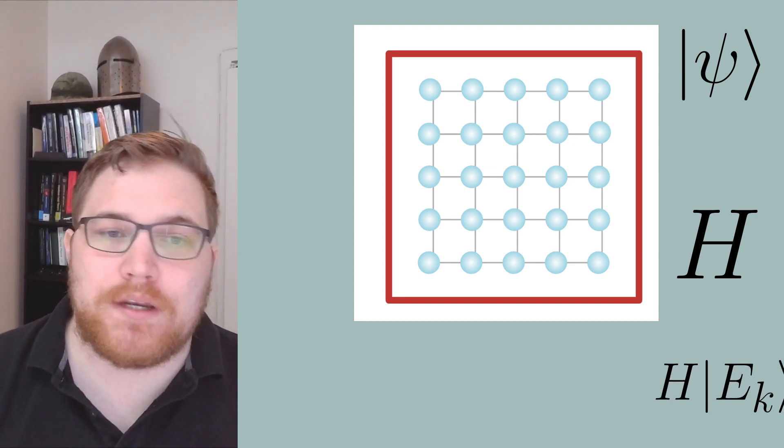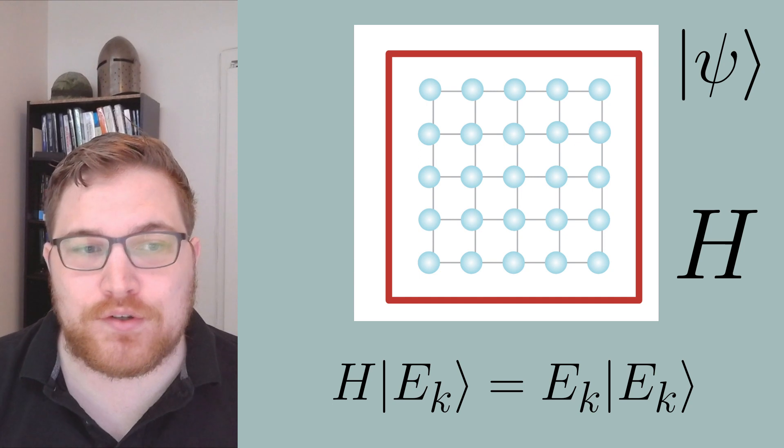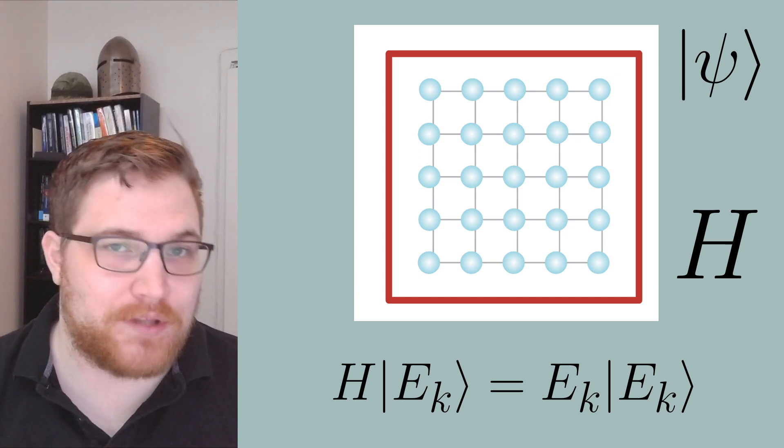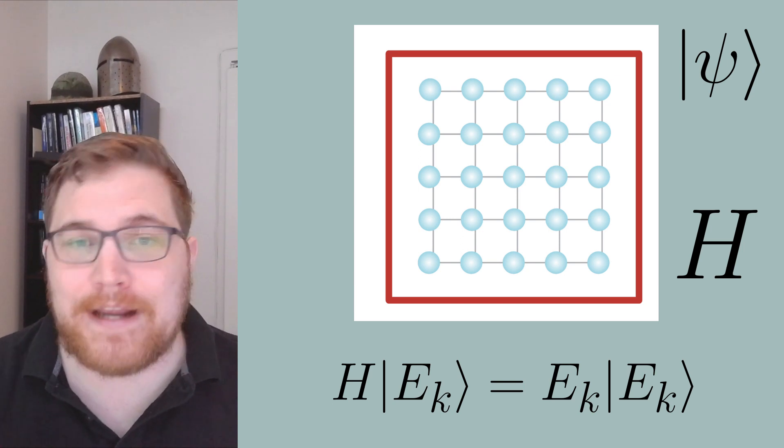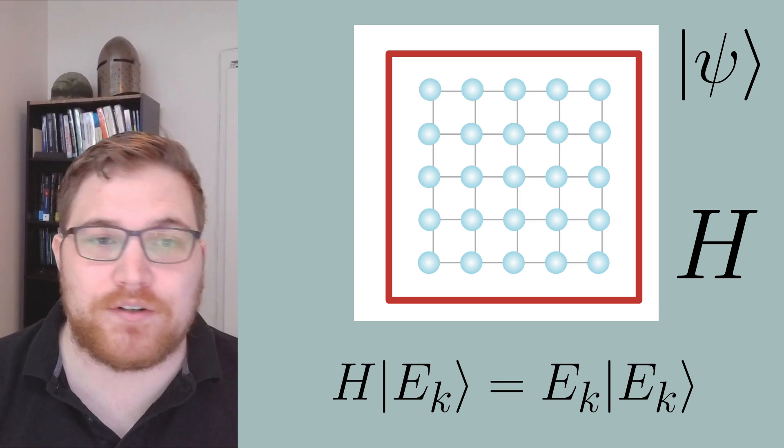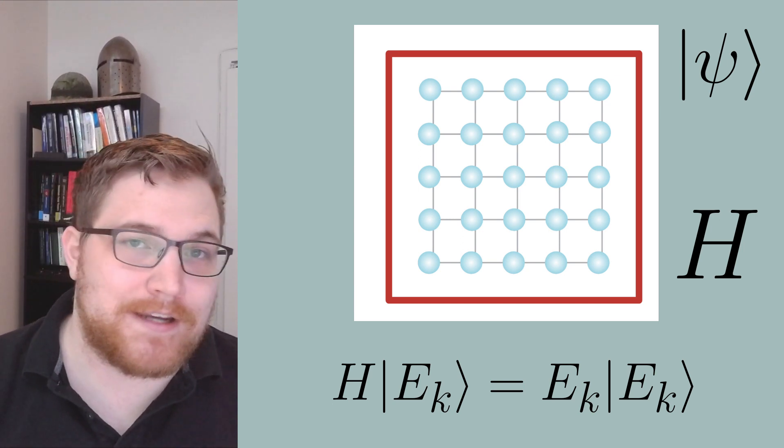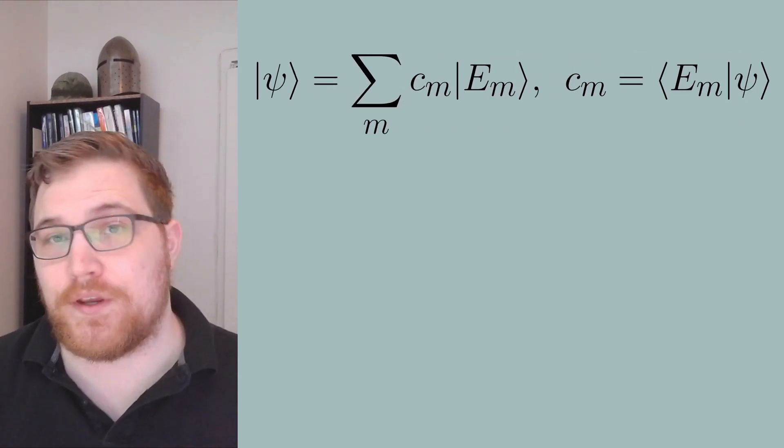If we solve the Hamiltonian and find the energy eigenvectors, we can label the eigenvectors like we usually do. Under our assumption, there is a finite number of energy eigenvectors, as long as we have a finite dimensional lattice. We can break up our pure state psi, which is our initial condition, in terms of the energy eigenbasis.